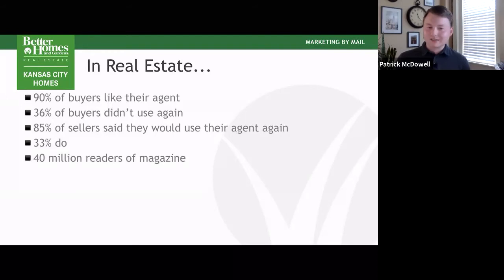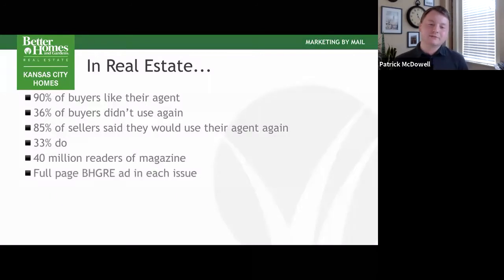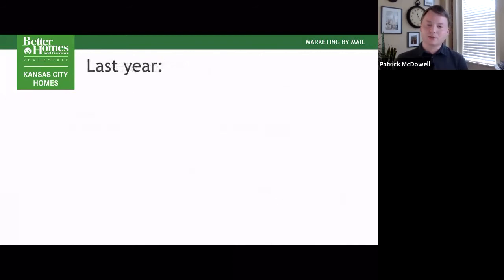We have the perfect brand in real estate to partner with bulk mail marketing — we're a lifestyle real estate brand. We're the only brand in real estate that has anything to do other than just real estate. Think about that. We have 40 million people that read the Better Homes and Gardens magazine. People are already getting the mail, already seeing our name in the mailbox. It makes even more sense when they get your name and the logo together. The BHG magazine puts a full page Better Homes and Gardens ad in every issue — that's part of their contract arrangement with BHG Real Estate. So a great thing to do would be to partner that presence with what's already showing up in people's mailboxes.